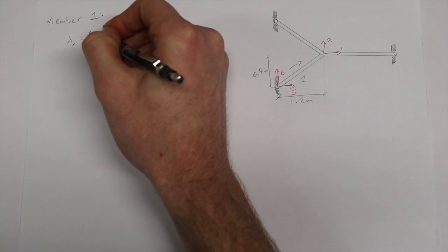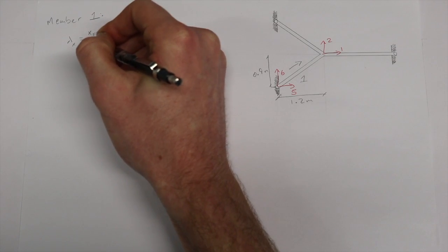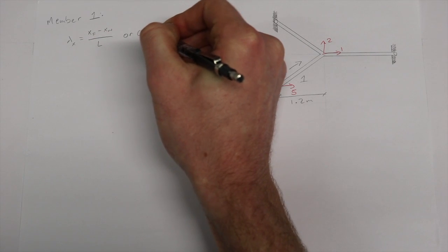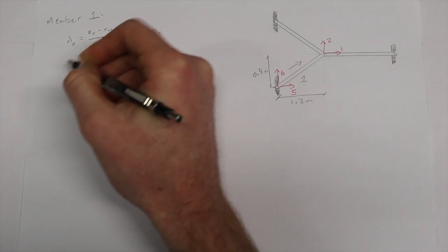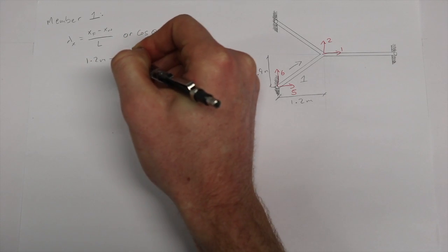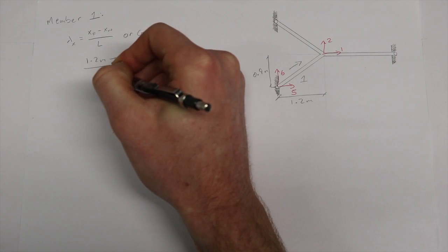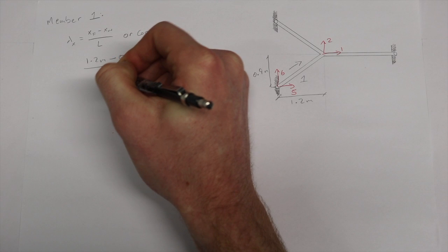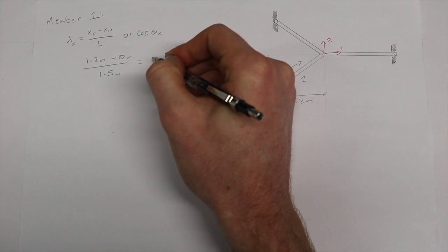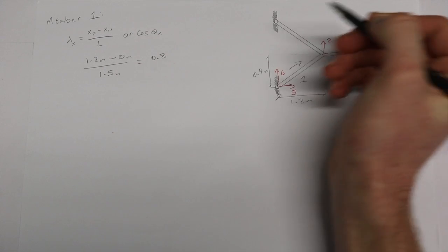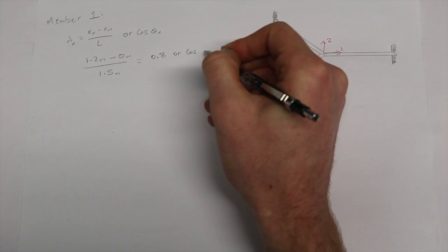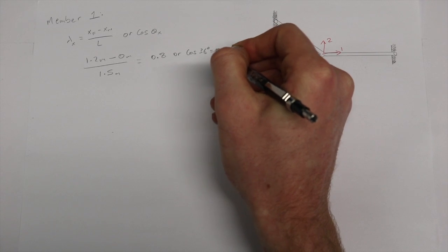Firstly, we will determine our values for lambda x and lambda y. This can be done two ways: using the near and far coordinates or the angle that the member is at. So for lambda x, we know that far x is 1.2 meters away from the origin and that near x is on the origin so it is zero. Also, by simple trigonometry using Pythagoras's theorem, the length of the member is 1.5 meters, so lambda x is 0.8.